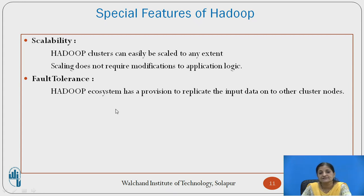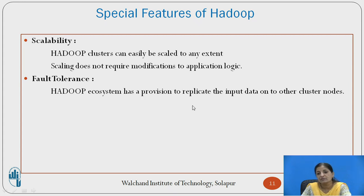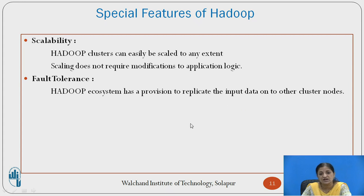The next feature is fault tolerance. Hadoop has a provision to provide replication of data on multiple nodes within the cluster or across clusters. Due to this replication strategy, even if one node goes down, data is available on the other nodes, so data availability is never stopped. Client applications can be served using replicas from other data nodes. If any one system goes down, the task allocated to it can be allocated to another available node, so execution of applications will also not stop. These are the three best features of Hadoop.